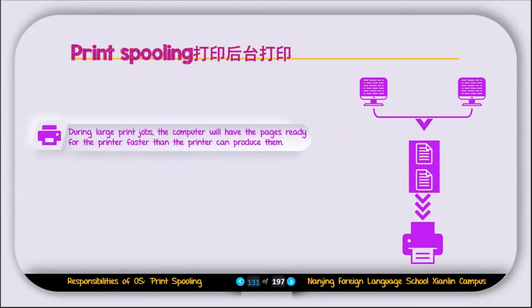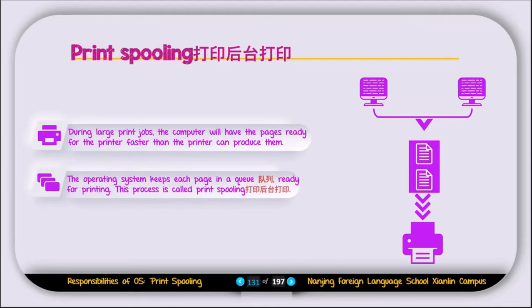The last responsibility of the operating system is called print spooling. During a large print job, the computer will have the pages ready for the printer faster than the printer can produce them. For example, if you want to print 20 pages, your computer can prepare those pages in a few seconds, but the printer may need one minute. The operating system keeps each page in a queue ready for printing. This process is called print spooling.